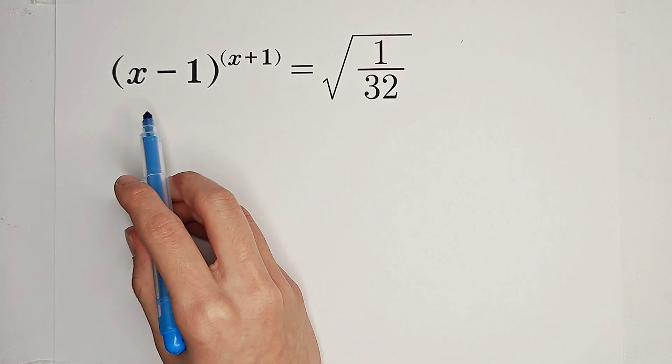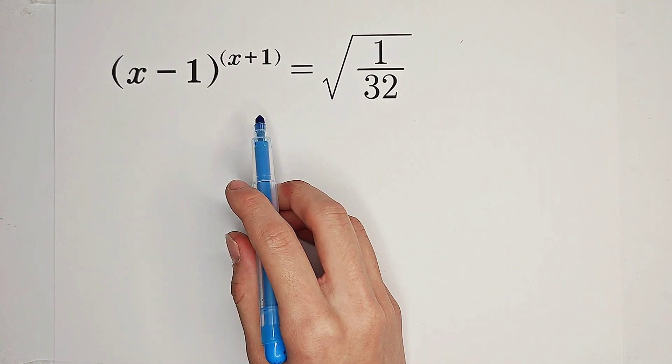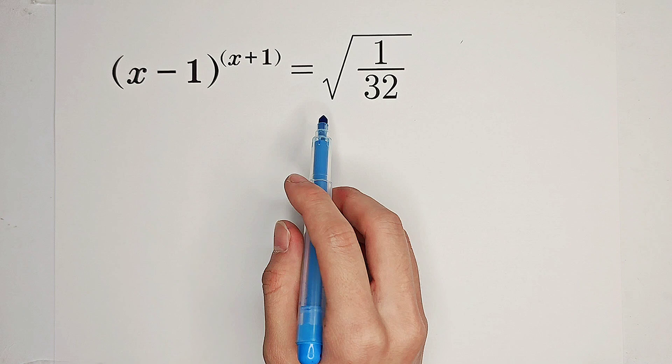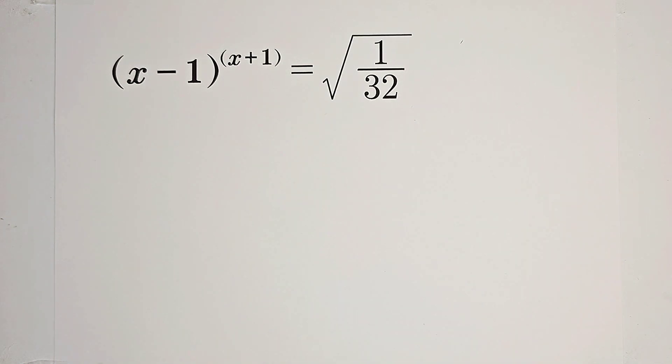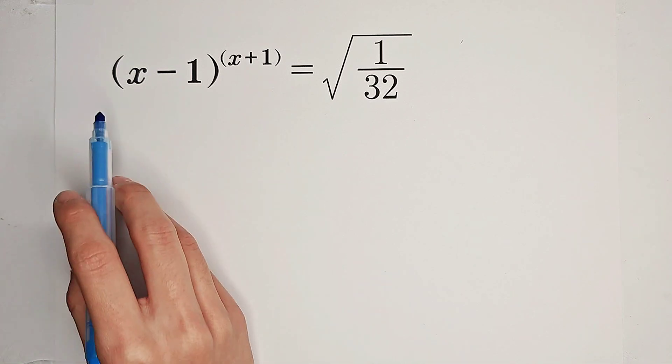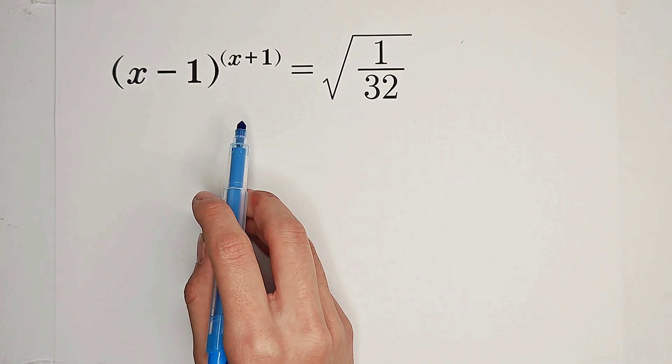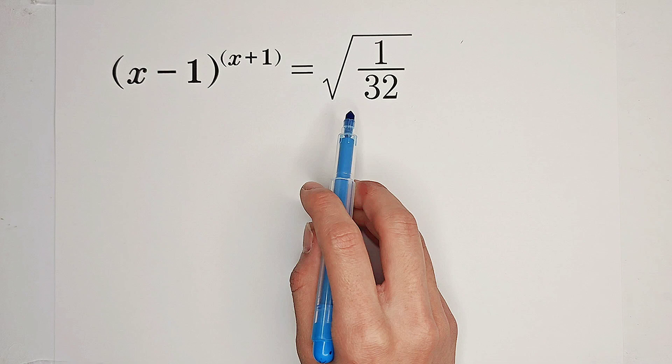Solve for x, satisfying x minus 1 to the power of x plus 1 equals square root of 1 over 33. Solve for x, satisfying x minus 1 to the power of x plus 1 equals square root of 1 over 32.